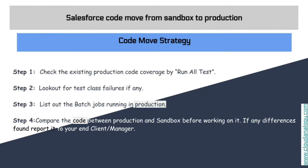As more and more projects came in and we encountered different issues, we enhanced the code move strategy. This is the more mature code move strategy we now have, summarized in different steps. Step one: check the existing production code coverage by running all tests, to absolutely make sure that no code in production is breaking and to identify any test class failures.